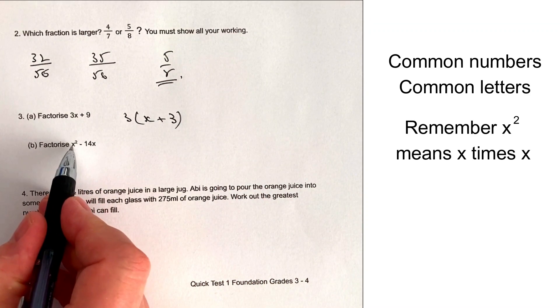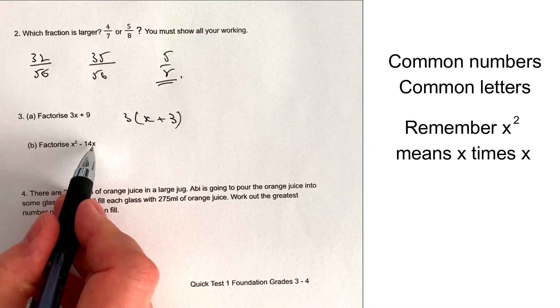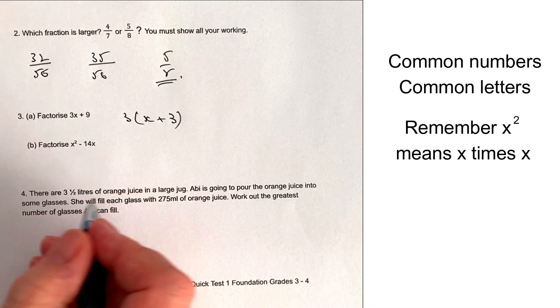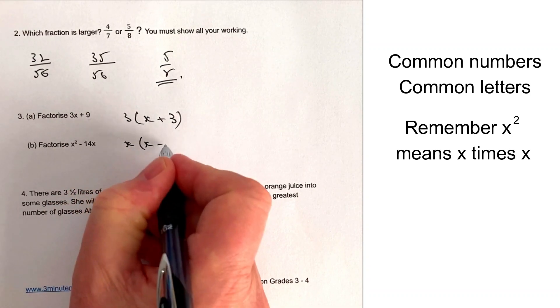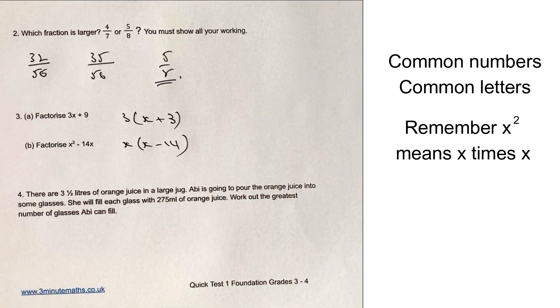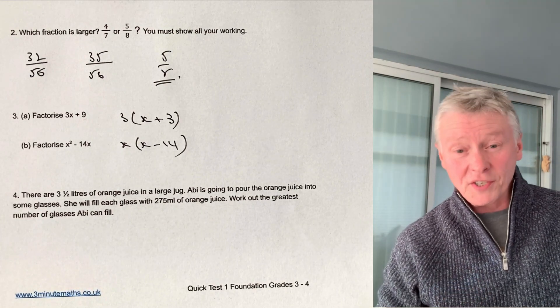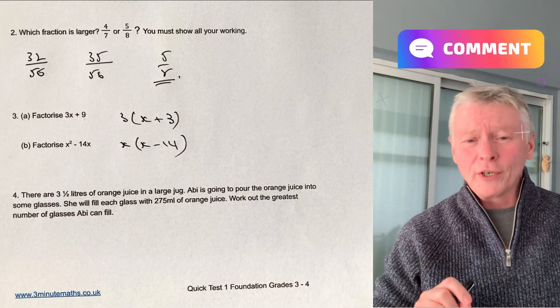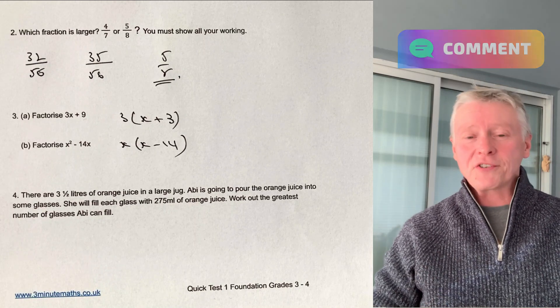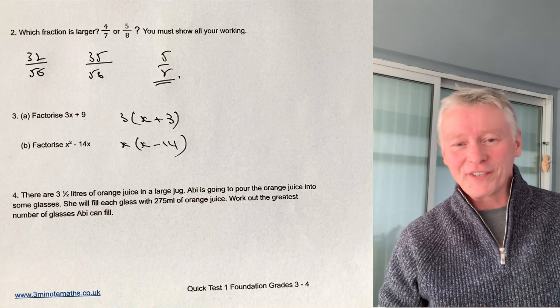Factorise this. Well, we're looking for the biggest number or term that will go into both of those, which is actually going to be x, so that would become x times x minus 14, and that would be the answer to question number 3. Please do download some of the practice worksheets from 3 Minute Maths, and you'll be able to have a go at some of these questions for yourself.